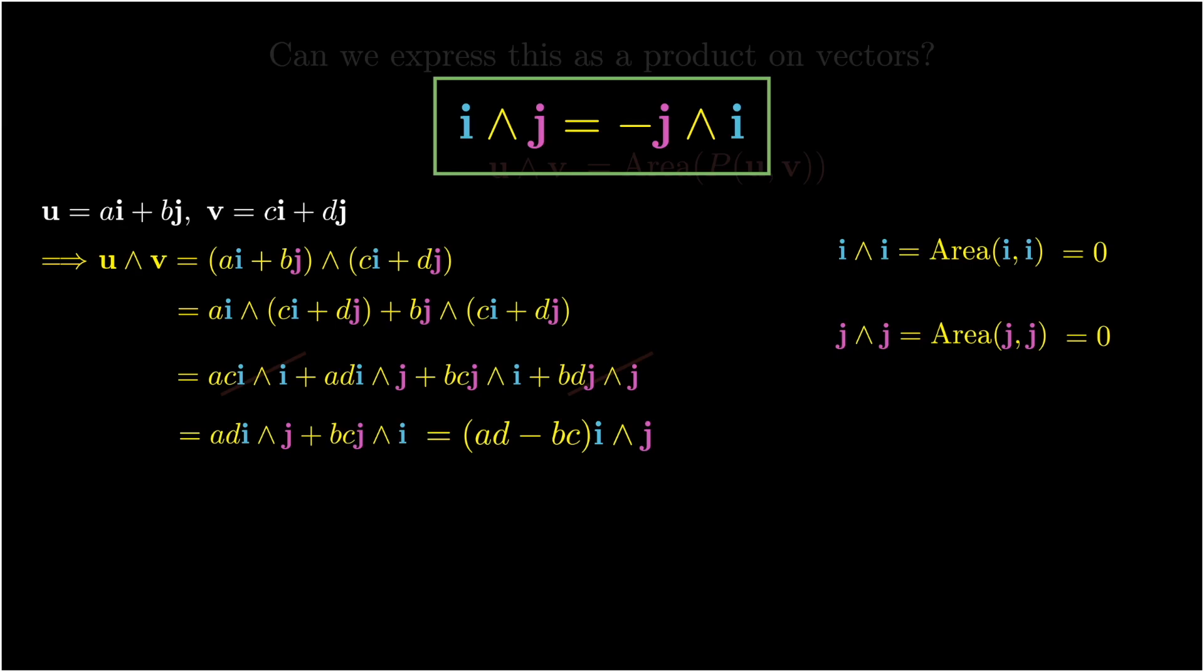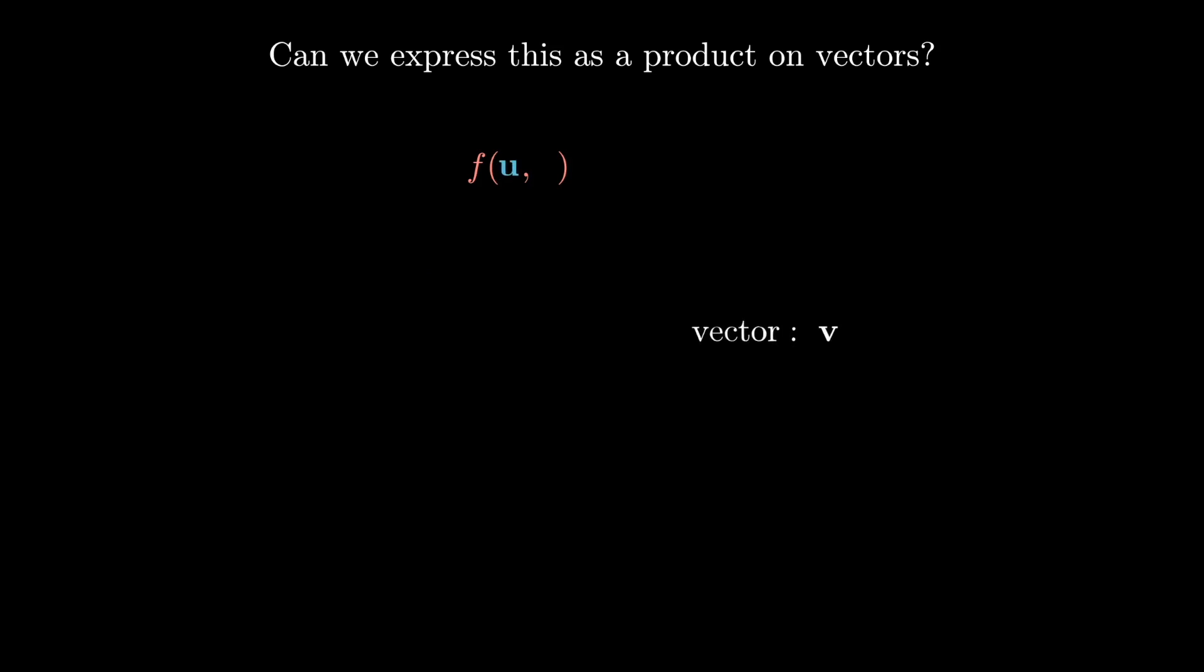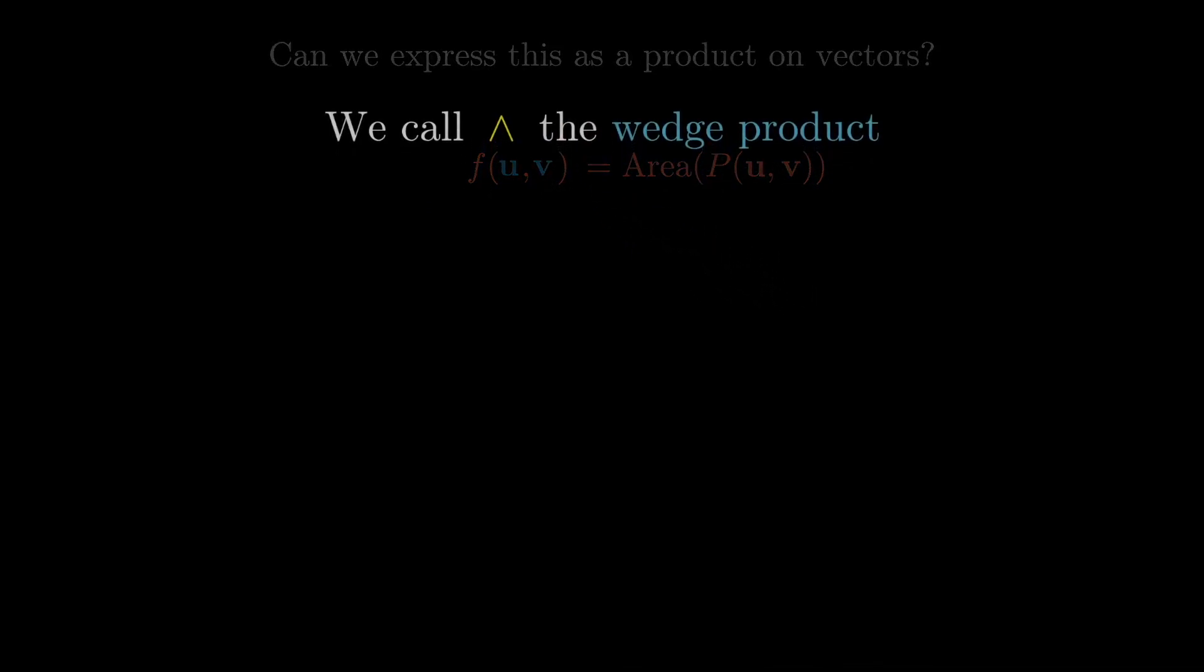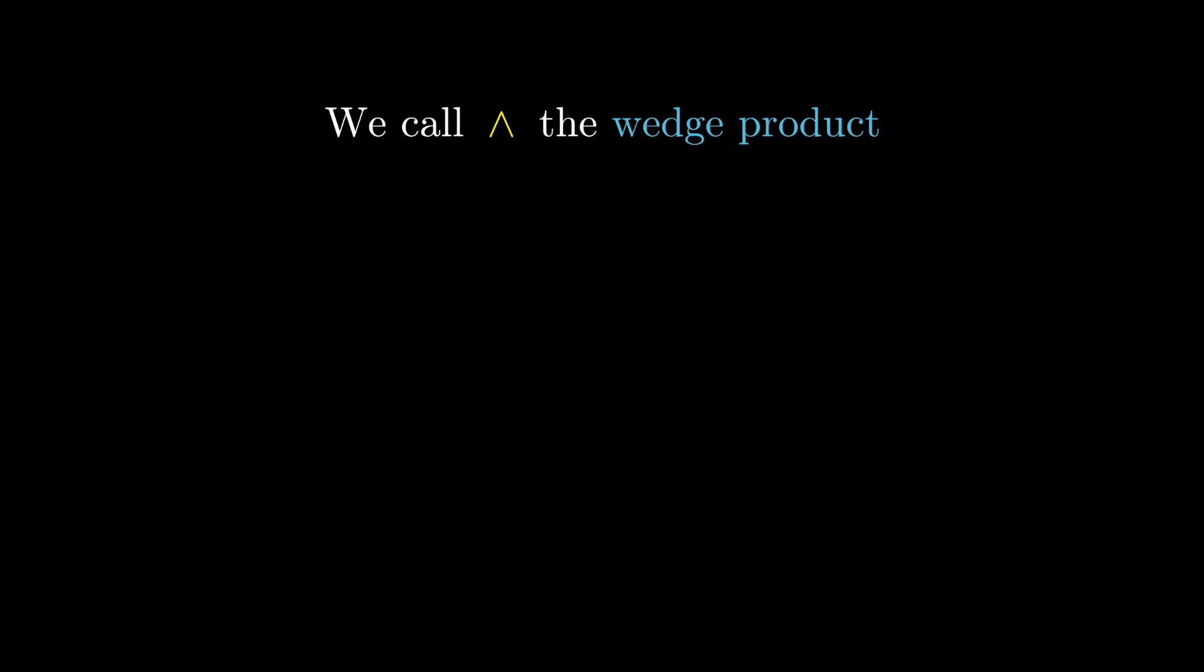So this wedge operation gives us exactly what we wanted. We want the area of the parallelogram formed by the vectors u and v. Now this operation on vectors is well known. It's known as the wedge product.